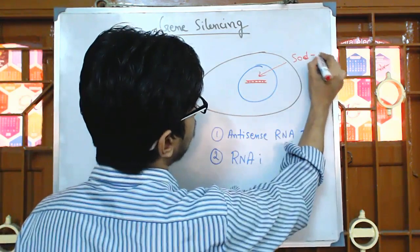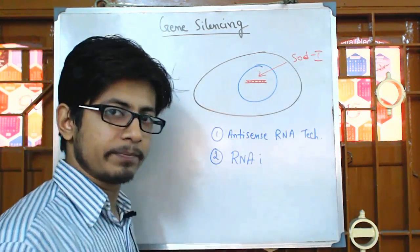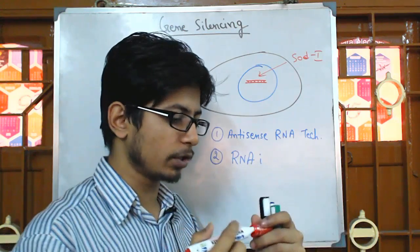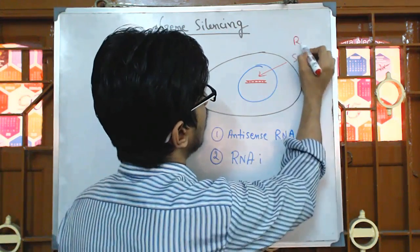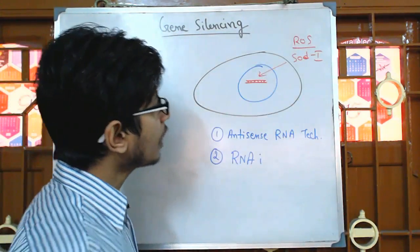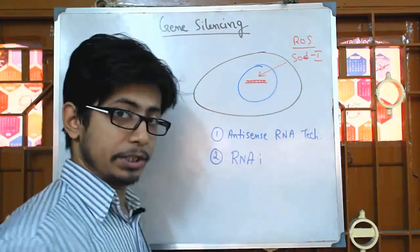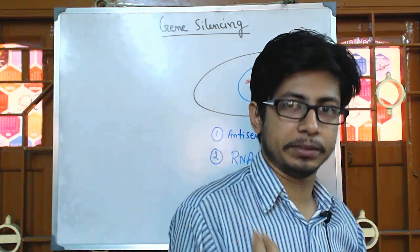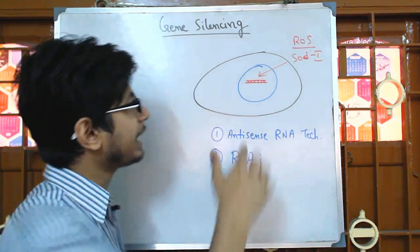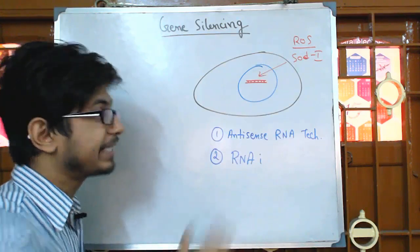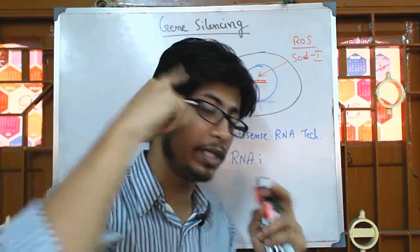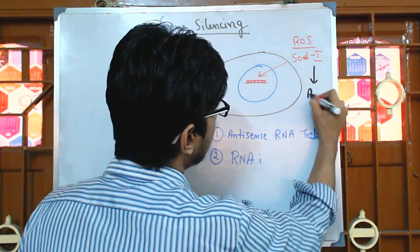There are different varieties of SODs present in our body. One of that type is SOD1. SOD1 is a very important gene to fight against reactive oxygen species, or ROS — the free radicals. But if there is a mutation in this SOD, then SOD can behave badly, and in that case SOD creates a problem.